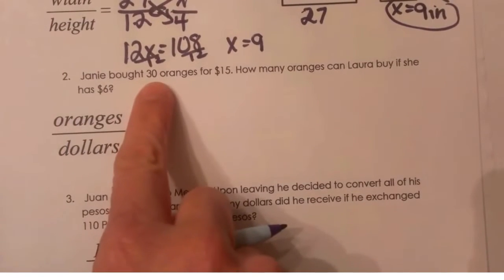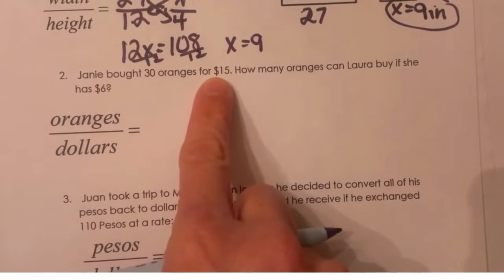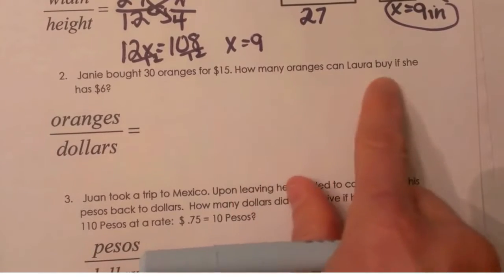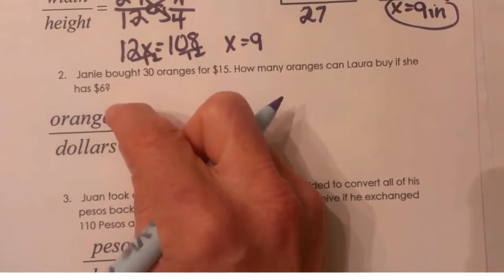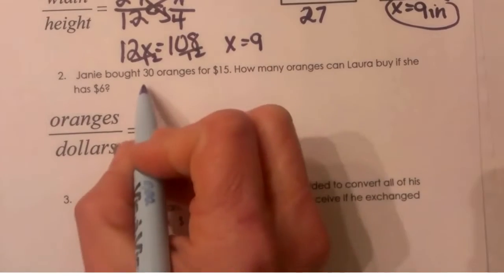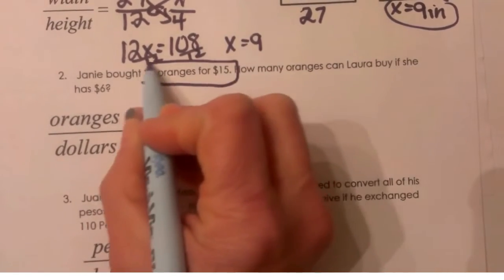Janie bought 30 oranges for $15. How many oranges can Laura buy if she has $6? So I've set up the proportion oranges over dollars. So what goes together? Well 30 oranges cost $15.